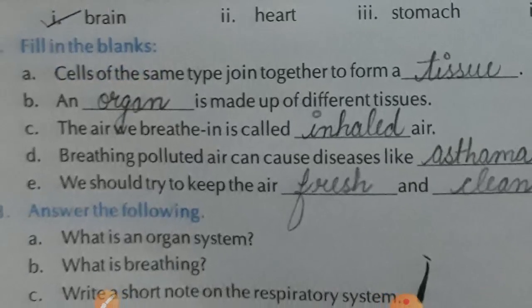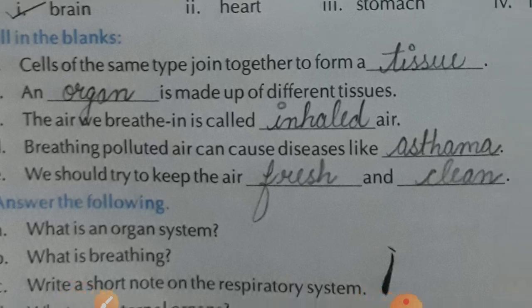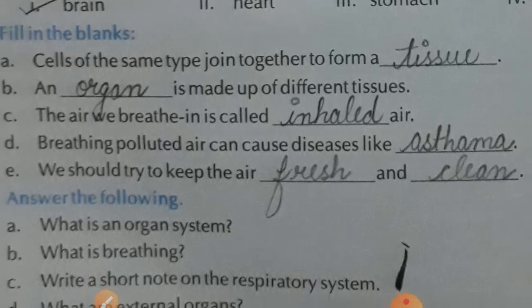B: an organ is made up of different tissues. C: the air we breathe in is called inhaled air. D: breathing polluted air can cause diseases like asthma. E: we should try to keep the air fresh and clean.